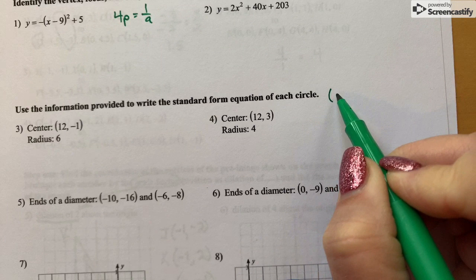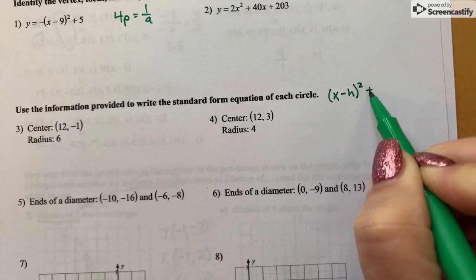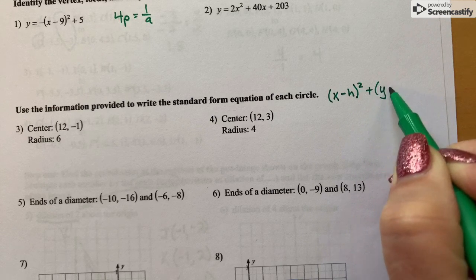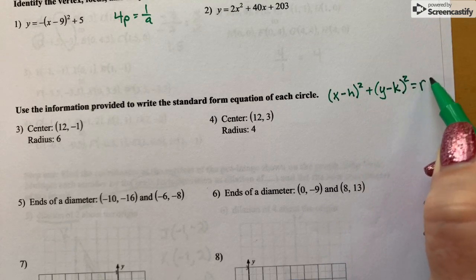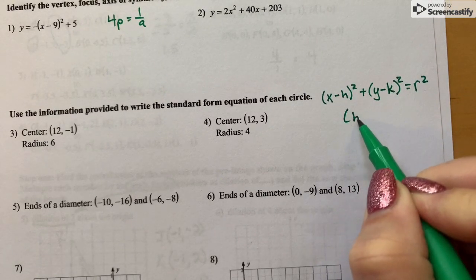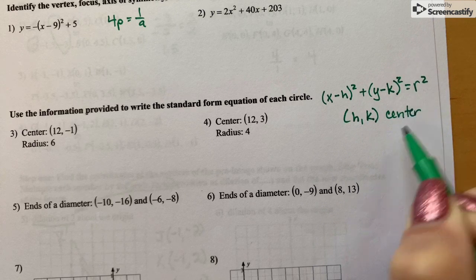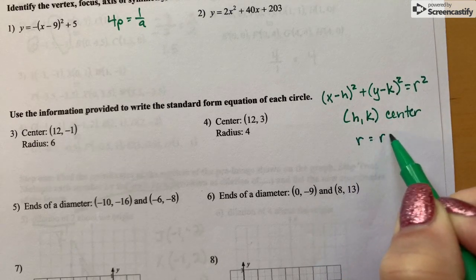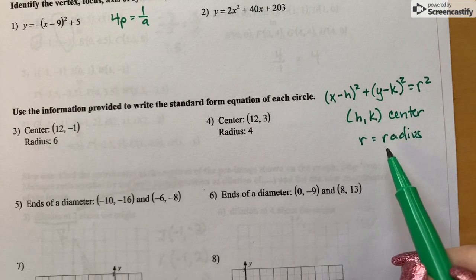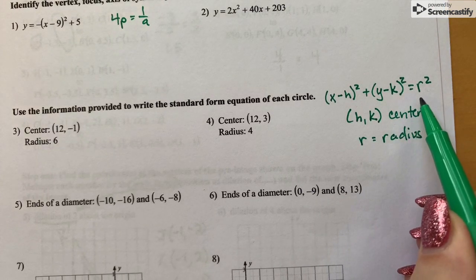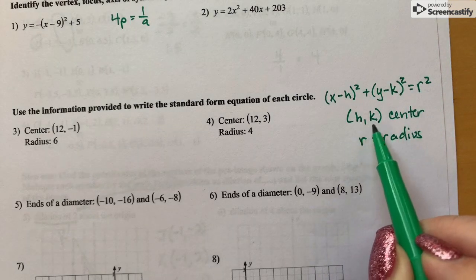The standard form of an equation of a circle is this, where HK is the center of the circle and R is the radius. So in the equation, if you know the radius, you will square it for this side of the equation. And once you find the center, you would just plug the coordinates of the center into the equation.